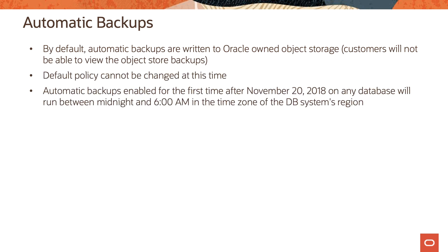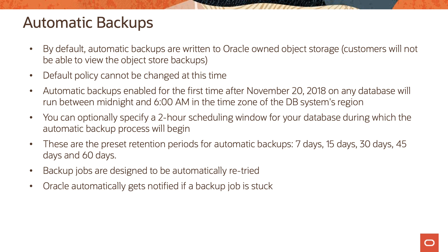Let's now look at some information on automatic backups. By default, automatic backups are written to Oracle-owned object storage; customers will not be able to view the object storage backups, and the default policy cannot be changed at this time. Automatic backups enabled for the first time after November 20, 2018 will run between midnight and 6 a.m. in the time zone of the DB system's region. You can optionally specify a two-hour scheduling window during which the automatic backup process will begin.